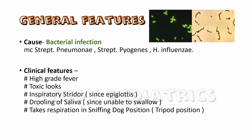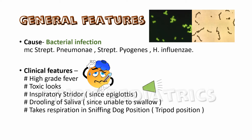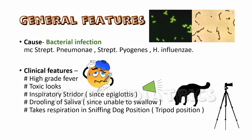Clinical features include high-grade fever, toxic look, and inspiratory stridor since the epiglottis is above the vocal cords. There is drooling of saliva as the patient is not able to swallow anything. The typical posture shown by the patient is the tripod position as he takes respiration in a sniffing dog manner.